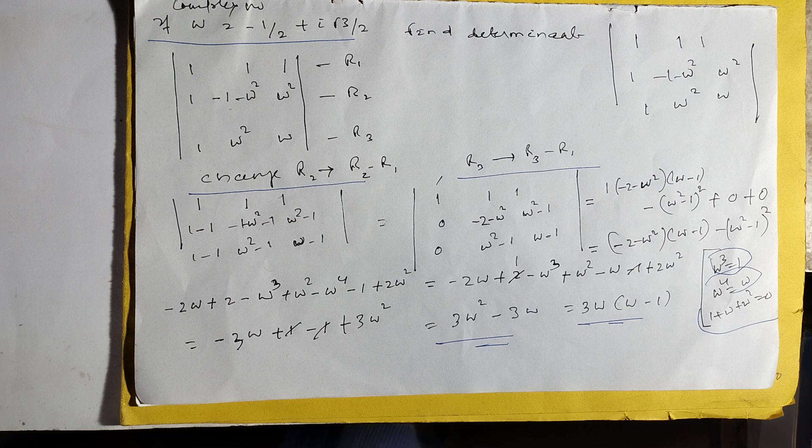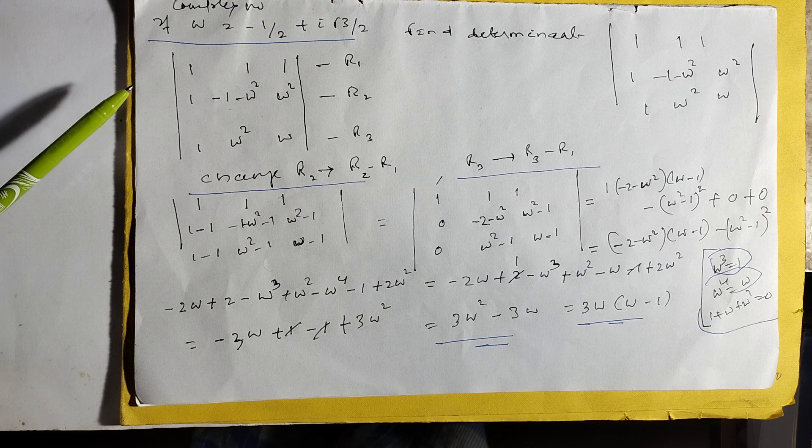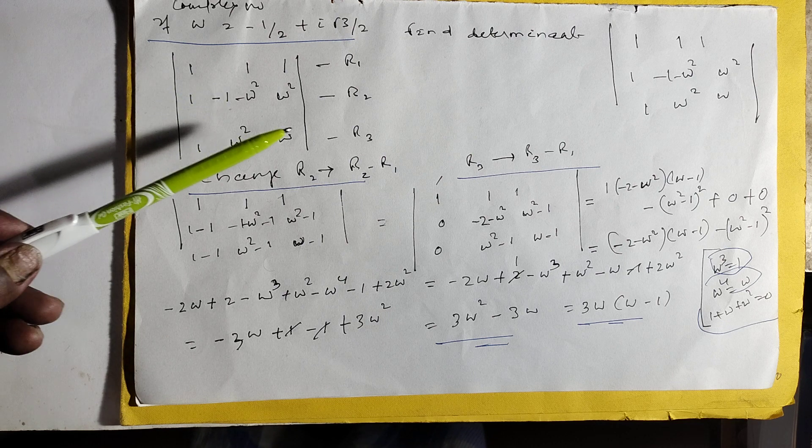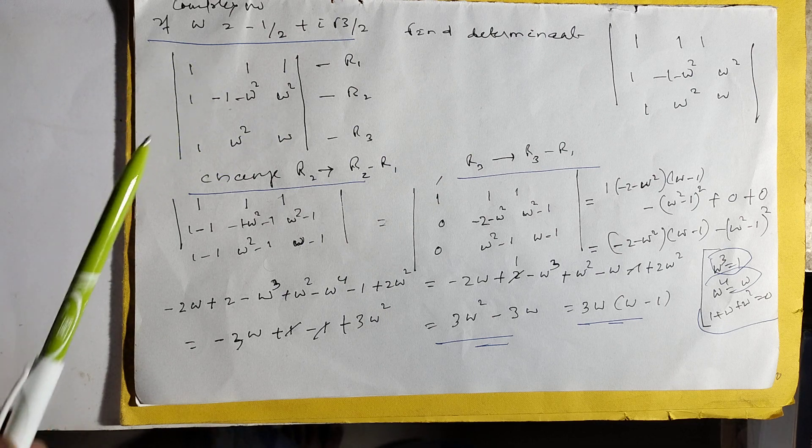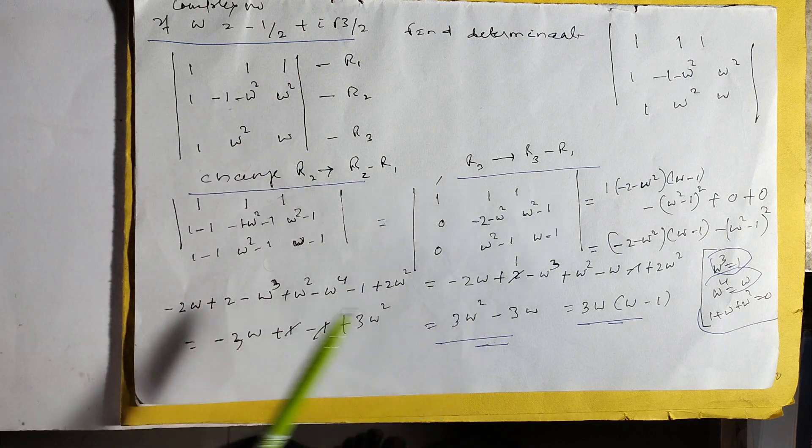This is a complex number. And here, 1, 1, 1, minus 1, 1, minus 1, omega square, omega square, 1, omega square, omega square. Here, omega square. Here, R1, R2, R3, change R2 to R2 minus R1, change R3 to R3 minus R1.